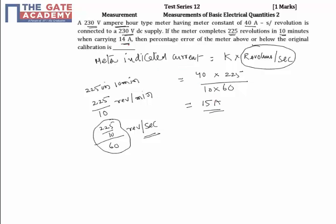The current is carrying 14 amperes, so the measured value is 15A and the true value is 14A. The percentage error equals measured value minus true value divided by true value times 100. If you simplify this, you get 7.14 percent.